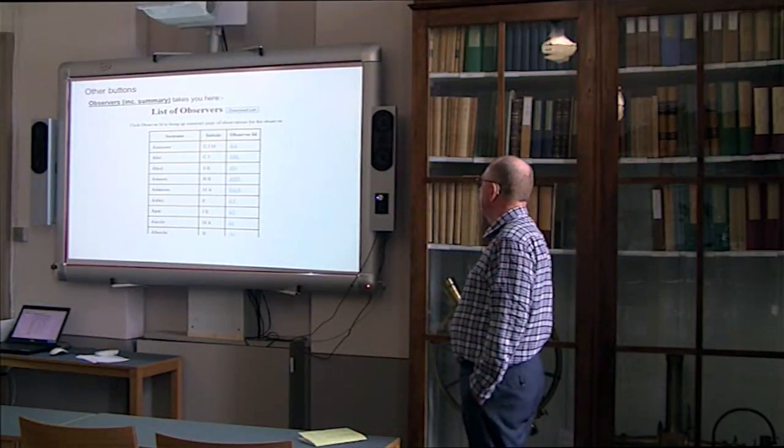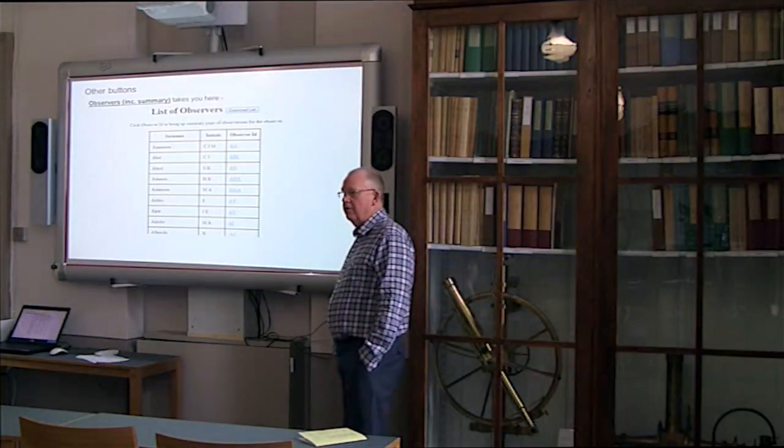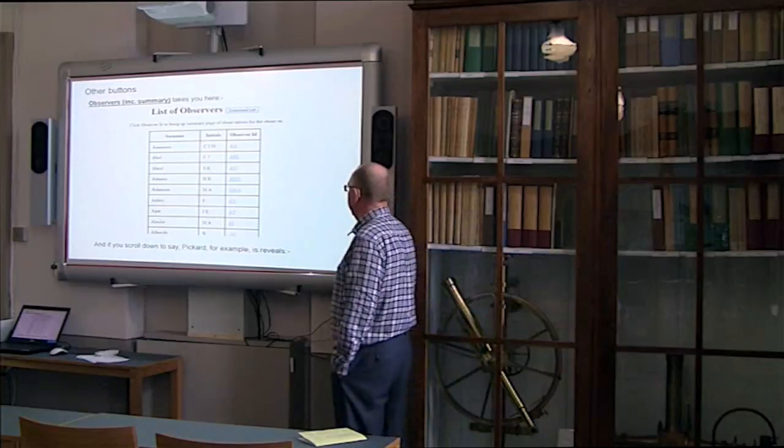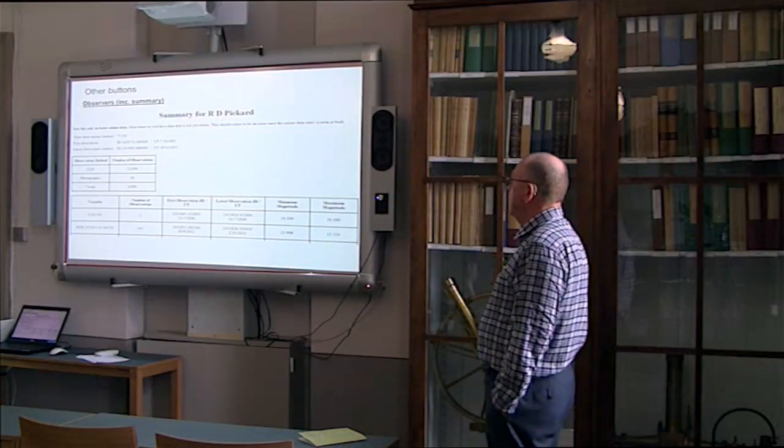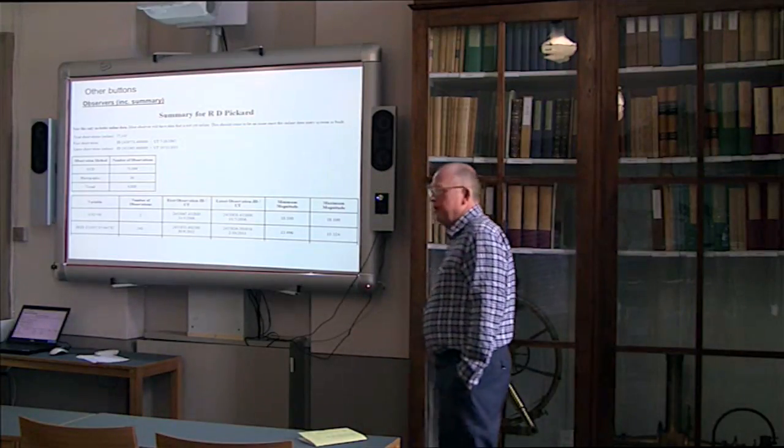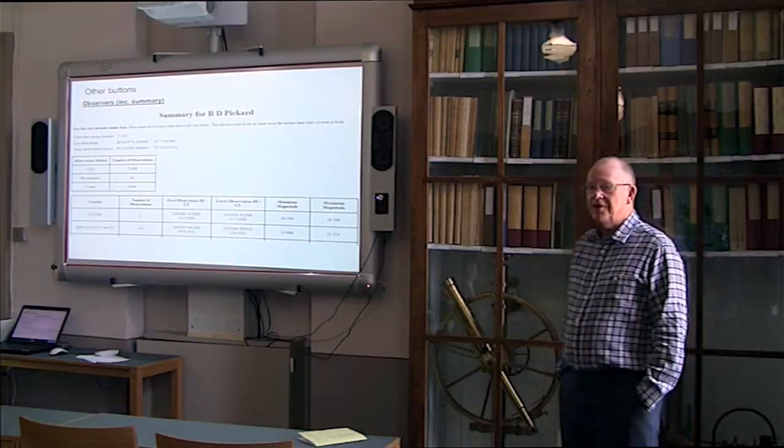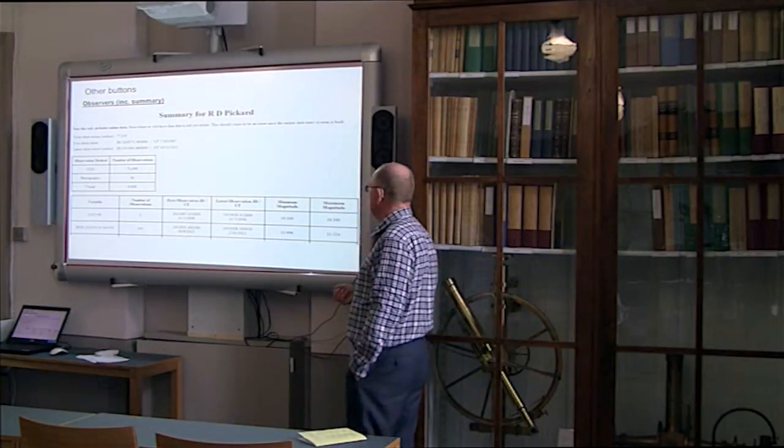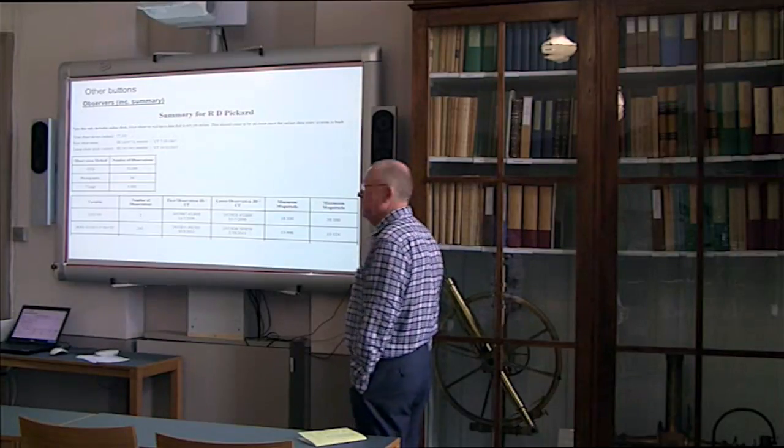So it gives the details of our individual observers, and they are from around the world. Take Roger Pickard, for example. This will reveal a summary of what he's done. In the old days he was doing photographic work. You can see how the explosion of CCD observations has taken over from visual: 4,008 visual and 73,000 CCD. It gives details of the minimum and maximum, the variable, the number of observations, the minimum and the maximum magnitudes.